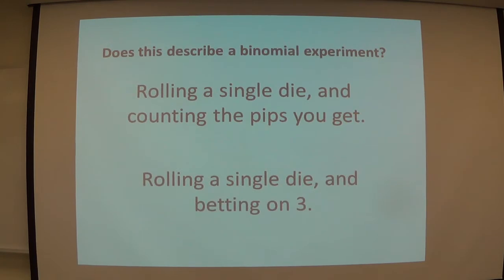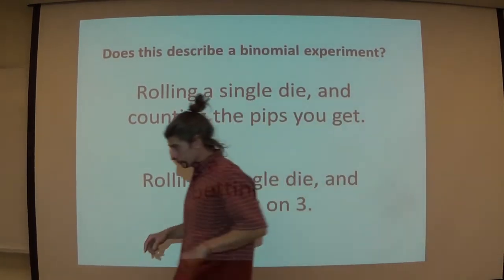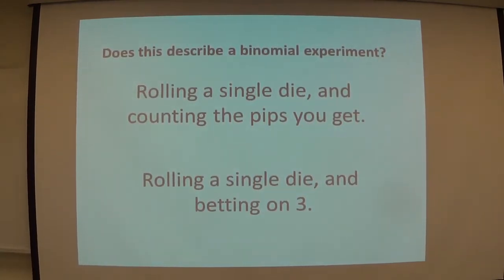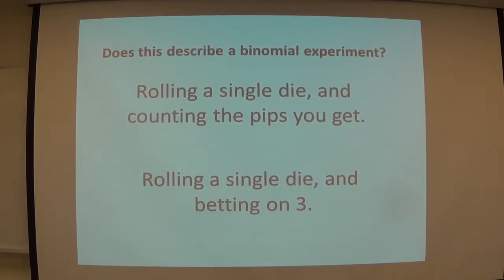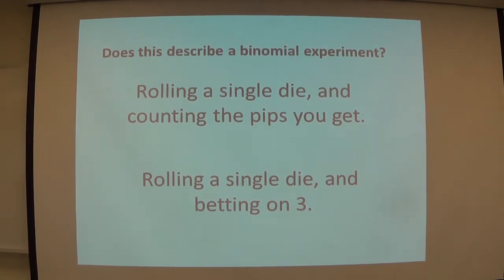I'm going to change the wording a smidge. So now I can accept either yes or no. It's not binomial, but my question is can we treat it as though it's binomial? To answer that question effectively, ask yourself what you're interested in. You're betting — it's a yes or no. It's either you're going to get a three or you're not. So if you roll a die one time, you can keep track of how many threes you get. You're either going to or you're not going to — we can make this binomial.